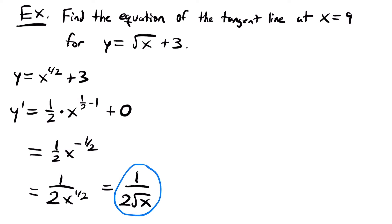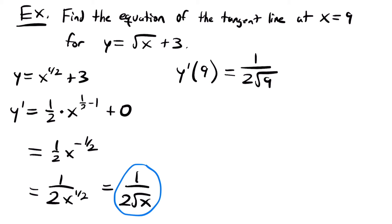Now we want to find the slope at x equals 9. We have our derivative, which represents the slope for any point on the function. We'll plug in 9: y prime of 9 equals 1 divided by 2 times the square root of 9. The square root of 9 is 3, so this equals 1 over 2 times 3, which equals 1/6. That is our slope m at x equals 9 for this function.